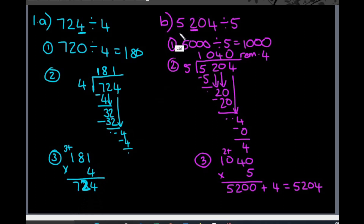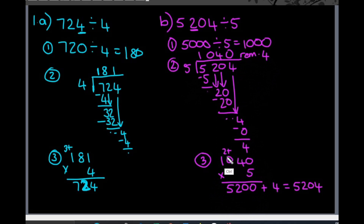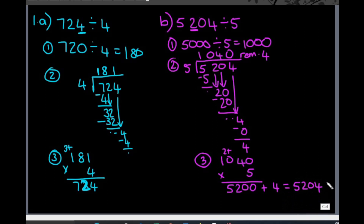In B, I have 5,204 divided by 5. I first rounded the dividend to the nearest 1,000 and got an estimate of 1,000, so my answer should be around about there. Using the long division method, I got 1,040 with a remainder of 4. To check, I multiplied 1,040 by 5 and got 5,200, then added the remainder of 4, which gave me 5,204. That's how I know my answer was correct.